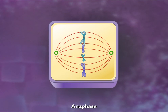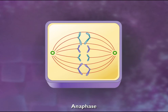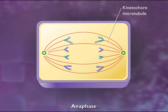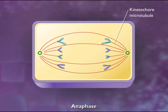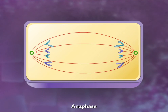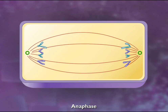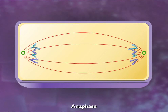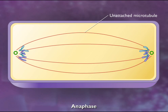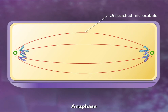In anaphase, the microtubules attached to the kinetochores of each chromosome shorten, drawing the chromatids of each chromosome to opposite ends of the cell, while the unattached microtubules elongate, stretching the cell.